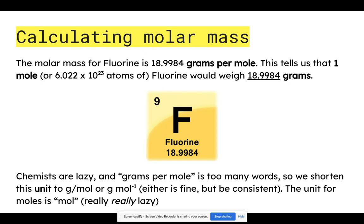Chemists are really lazy and grams per mole is too many words. So instead we shorten that unit to g/mol or g mol to the power of negative one. Either is fine, but just be consistent. I prefer g/mol because it's quicker to write.